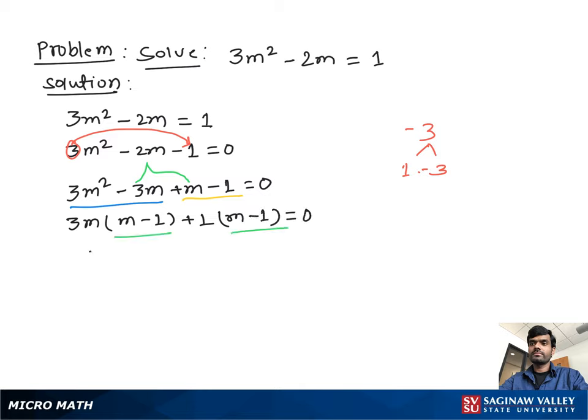From both sides we take out m minus 1 as a common factor. Then we have left 3m plus 1, all equal to 0. Now these two terms in multiplication give us 0, so we will set each term equal to 0.